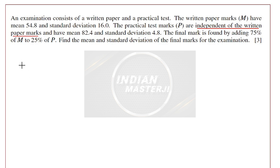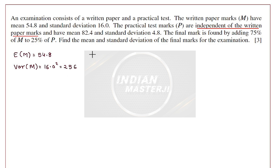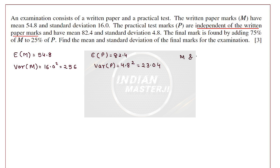Let's write down the data given. The mean of the written paper marks M is 54.8, and the variance is 16.0² = 256. For the practical test, the mean P is 82.4, and the standard deviation is 4.8, so the variance of the practical test is 4.8² = 23.04. Also given that M and P are independent — this is very important.